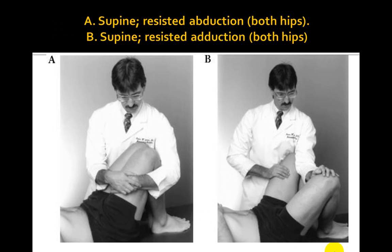In section A, the patient is supine and is having resisted abduction of both hips. In section B, the patient is supine and you are resisting the adduction of both hips. You can apply this technique to various joints including the knee, the hip, the arm, the shoulder, etc.